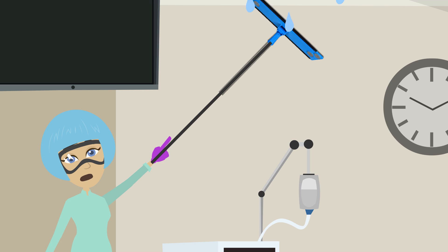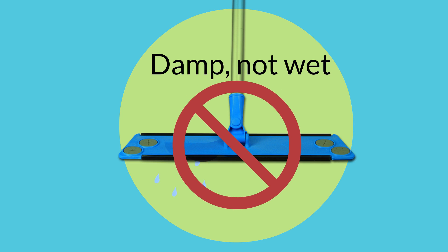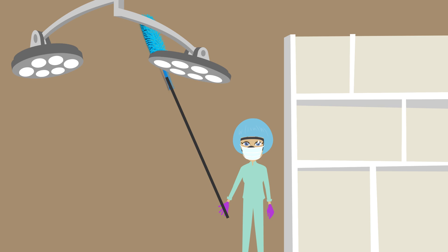When cleaning ceilings and walls for the scheduled cycle cleaning process, avoid dripping disinfectant onto items beneath higher surfaces by ensuring that the low lint or microfiber mop pad is damp but not wet. Clean and disinfect overhead surfaces including booms, lights, and shelves. Use high reach microfiber damp dusting equipment and microfiber cleaning cloths.